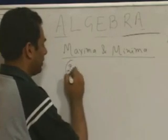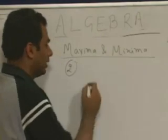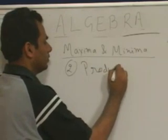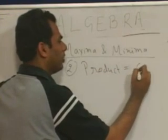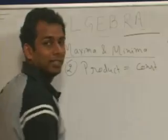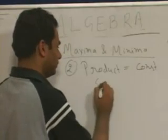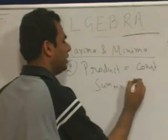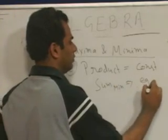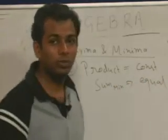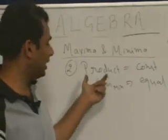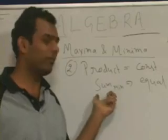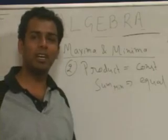The second principle is the maximum-minimum rule: if the product of positive numbers is constant, then their sum is minimum when all the numbers are equal. If the product of positive numbers is constant, then their sum is minimum when all the numbers are equal.